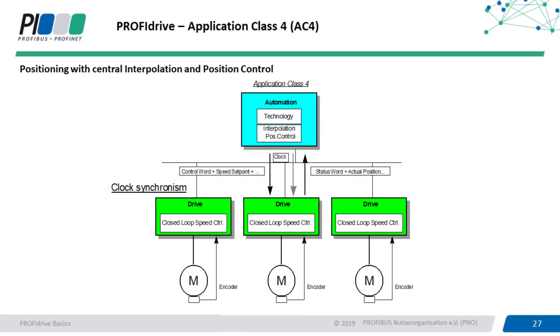In application class 4, drive axis positioning is done by a central interpolation in position control. For this, it is necessary to have an isochronous mode of operation between the controller and the drive device.